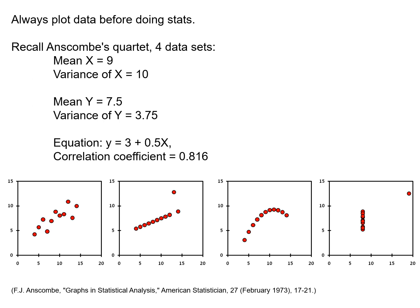Anscombe's Quartet shows four different datasets. Looking at the x and y values, the mean of x is the same for all four, the variance is also 10 for all four datasets, the mean y is 7.5 with a variance of 3.75, the best fit line equation is the same for all four plots, and the correlation coefficient is exactly the same. So statistically these four datasets are identical, but visually they're completely different.